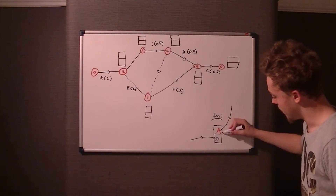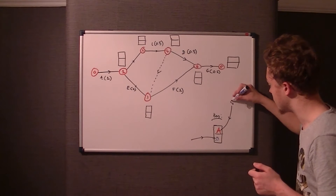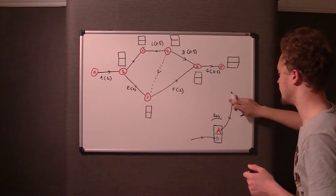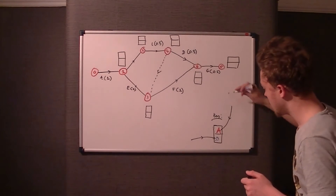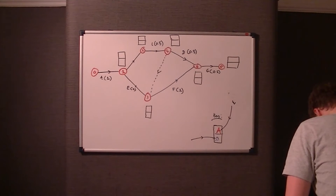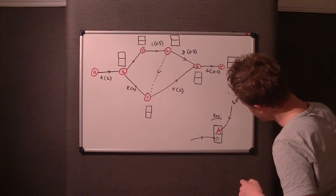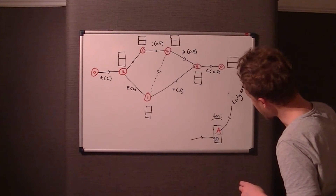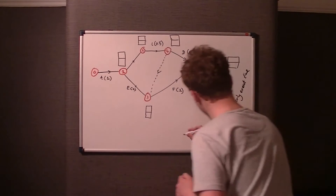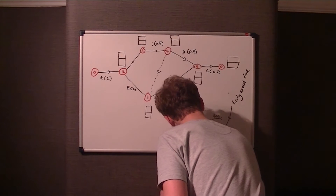The top number — labelled A — is something we call the Early Event Time, and the B is something we call the Late Event Time.